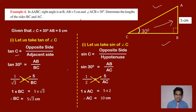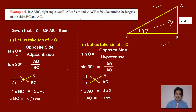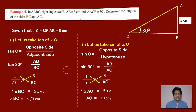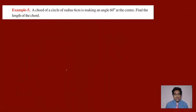We have calculated the lengths of the sides. Using trigonometric ratios, we find the lengths of the sides of the triangle. Let us move on to the second problem. A chord of a circle of radius 6 centimeters is making an angle of 60 degrees at the center. Find the length of the chord.